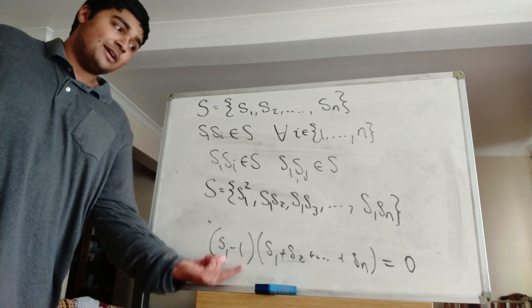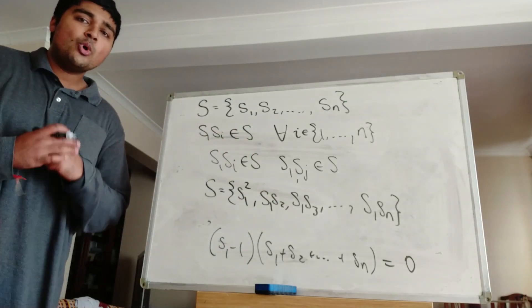Then, of course, we can cancel this from both sides and we'll get S1 plus S2 plus so on, all the way up to SN is equal to 0.